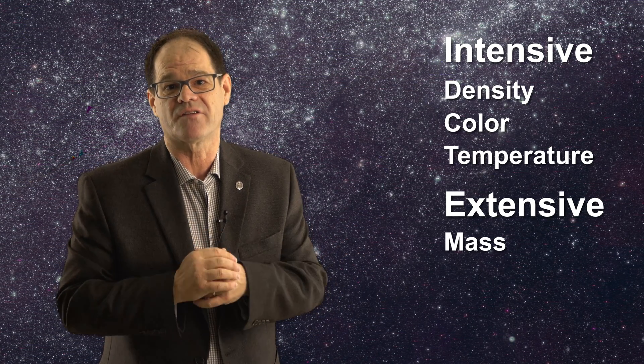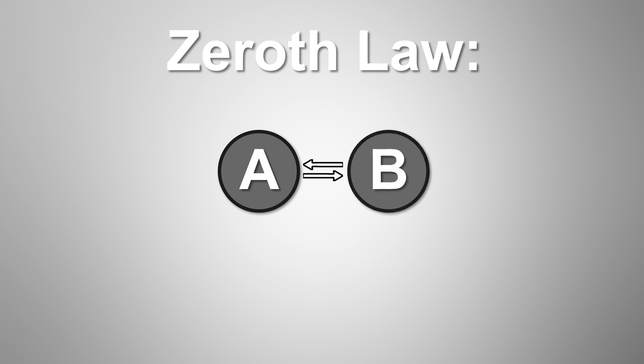Now, we are prepared to discuss the zeroth law. This law states that if you have an object A, which is in thermal equilibrium with another object B, and if B is in thermal equilibrium with yet another object C, then A must also be in equilibrium with C.